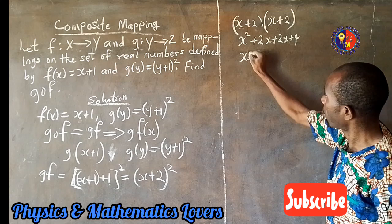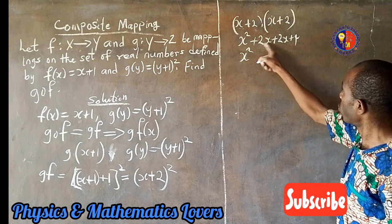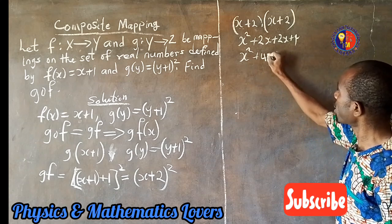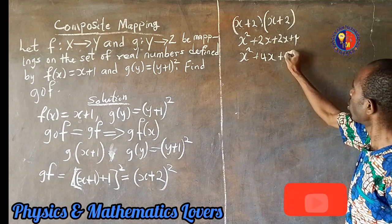Now we have x squared here, bring it down. x squared, then here we have 2x plus 2x, that is plus 4x, then here we have a plus 4.